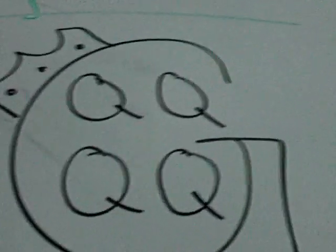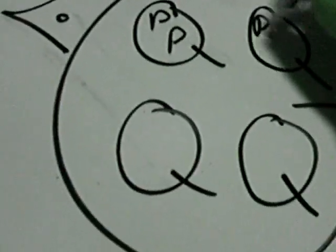And him and the queen each had a prince and a princess. So you put two P's in each queen.